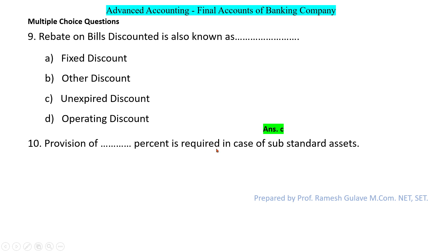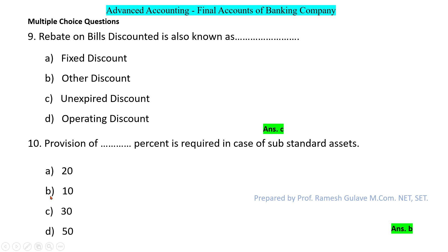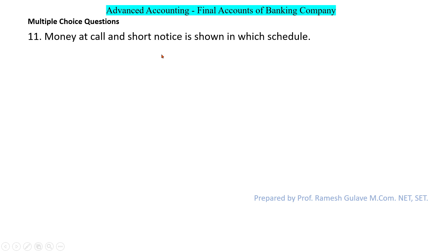The next question asks: provision of what percent is required in case of substandard assets? Banking company non-performing assets are classified into substandard assets, doubtful assets, and loss assets. In the case of substandard assets, 10% provision is required, so option B is the right answer.